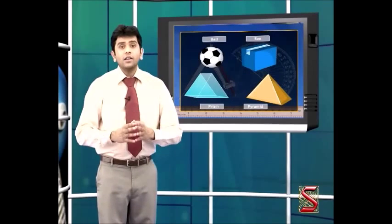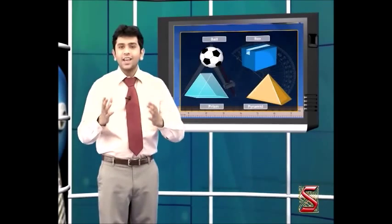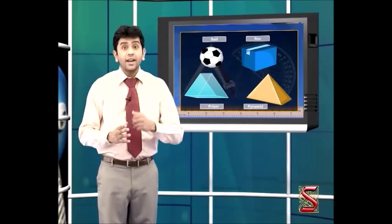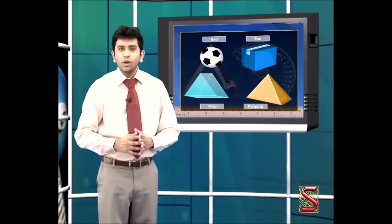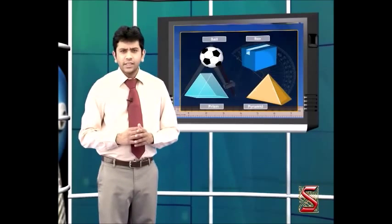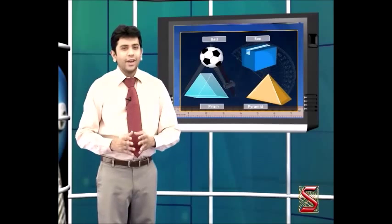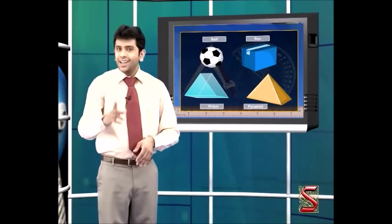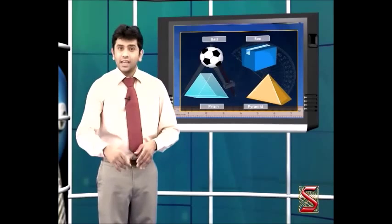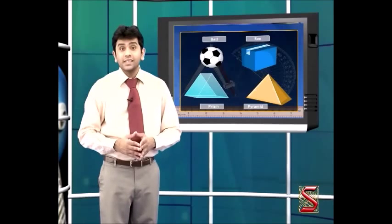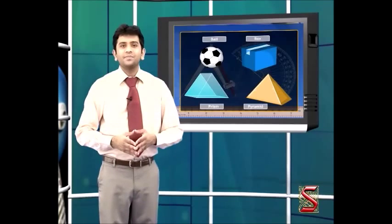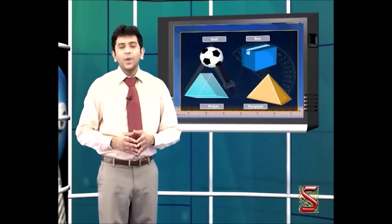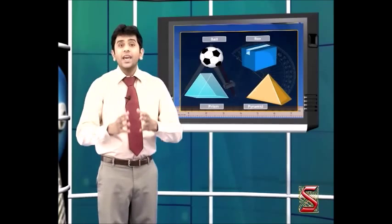These are all some of the things that we see in real life. Do you see that there is a length, breadth, and height for most of these objects? What is common is that all occupy space. What do you mean by it occupies space? It means the shape has space inside, but we cannot place things inside a square. But can we place things inside this box? Yes.